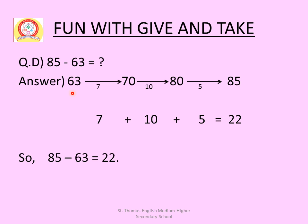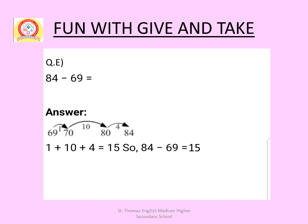For 85 minus 63, start forward counting from 63 to 85. From 63 to 70 in 7 steps, then 70 to 80 in 10 steps, then 80 to 85 in 5 steps. So 7 plus 10 plus 5 equals 22. Therefore 85 minus 63 equals 22.